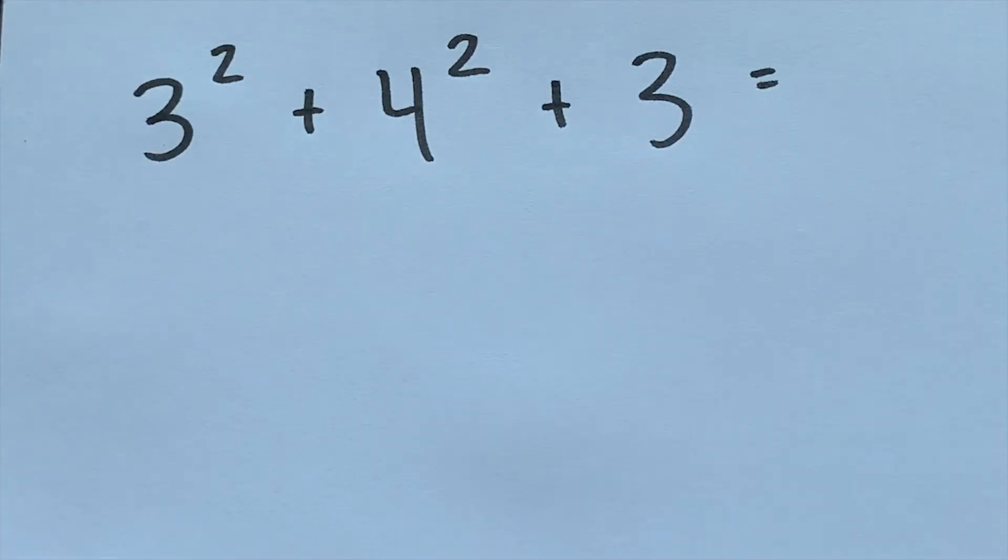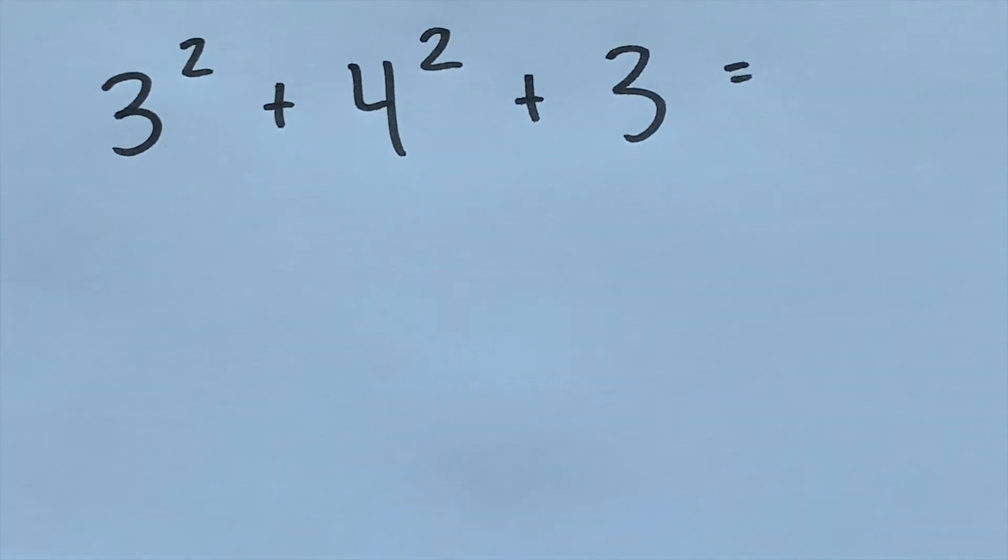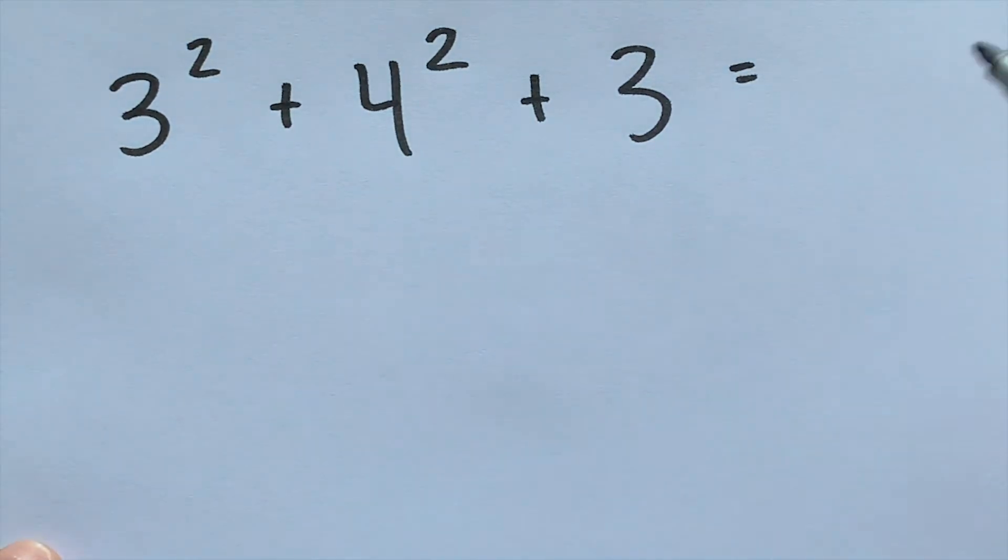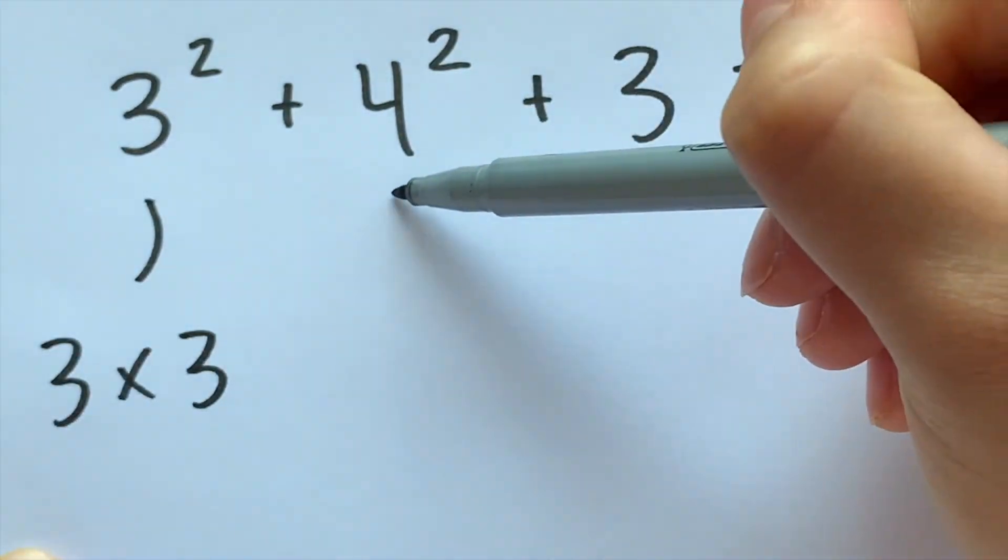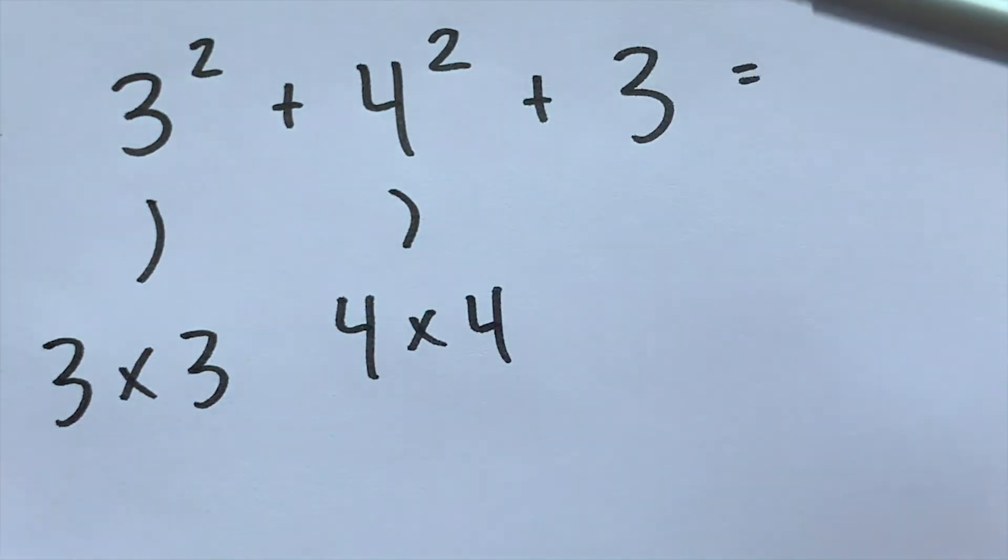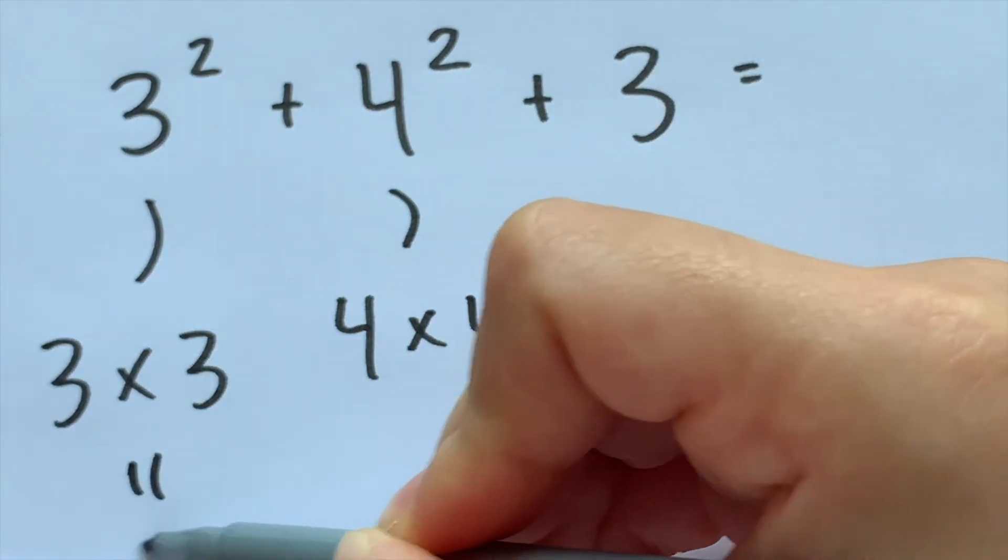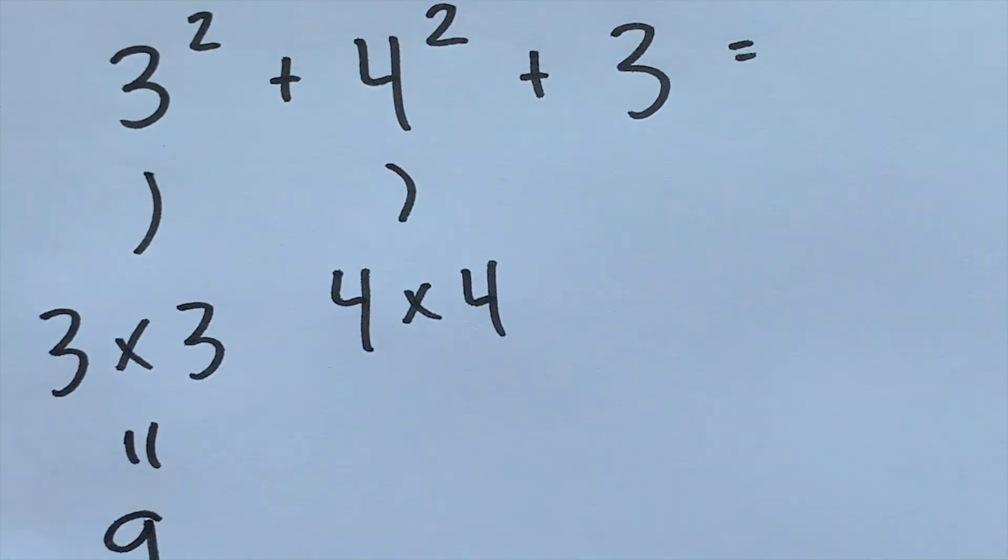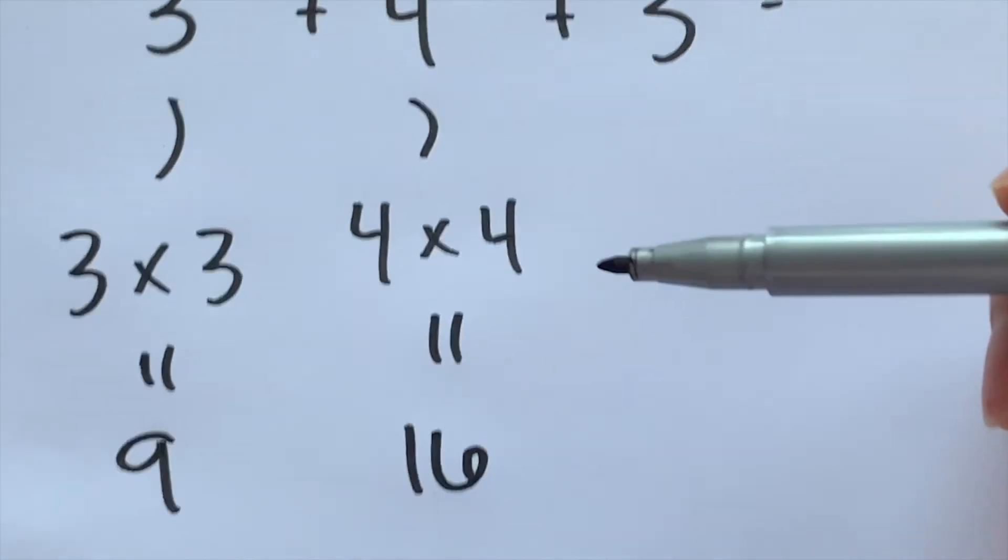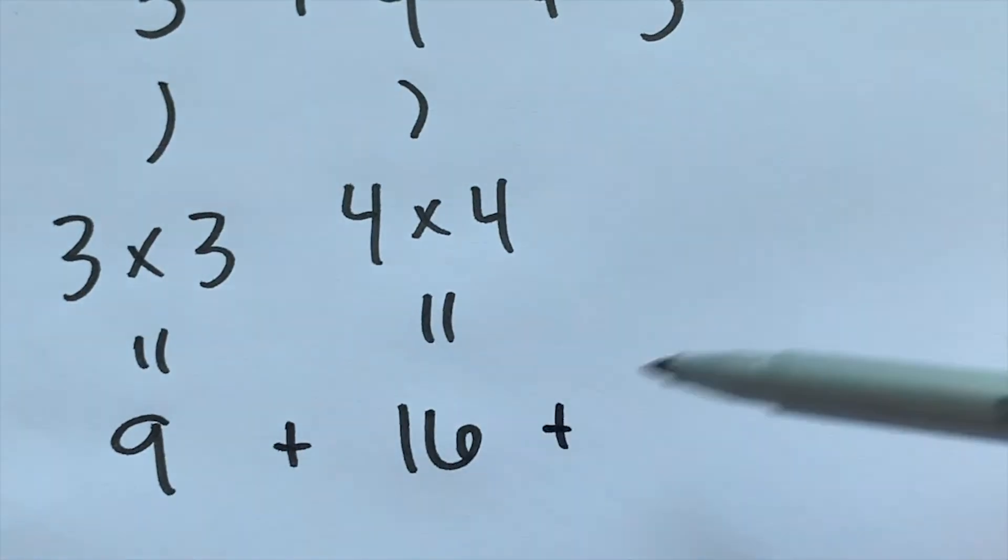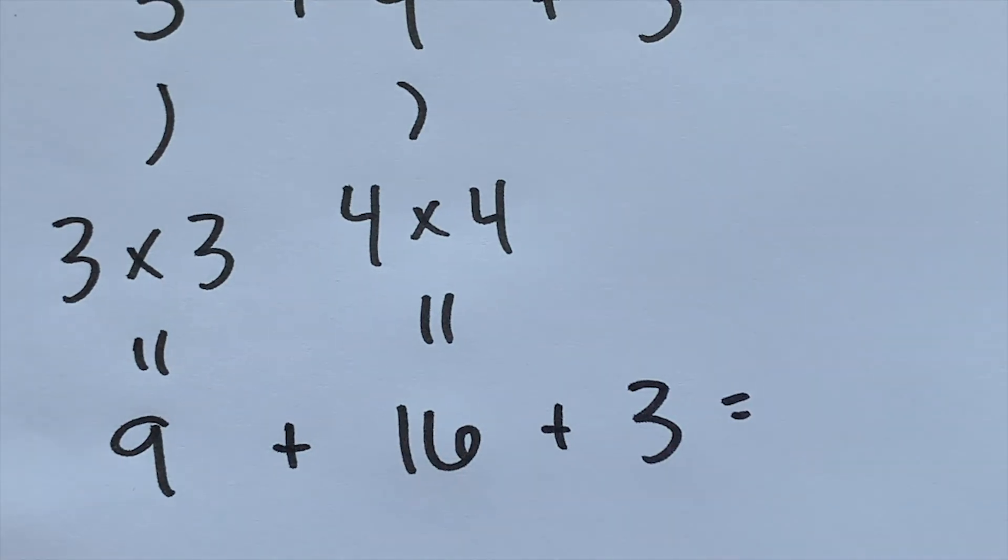Now here we have this problem, which looks a little bit more complicated because we have more square roots than in the other problems. So again, we just translate it to make it easier for us. So this one means three times three, this one means four times four, and this gives us nine, and this one gives us sixteen. So to translate that would be nine plus sixteen plus three equals. And I have my dandy calculator here to help me out with that. And it would equal to twenty-eight.